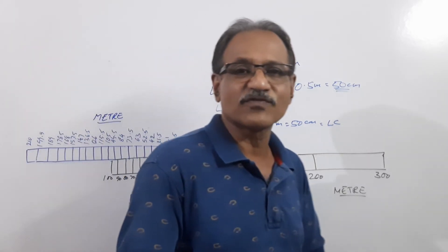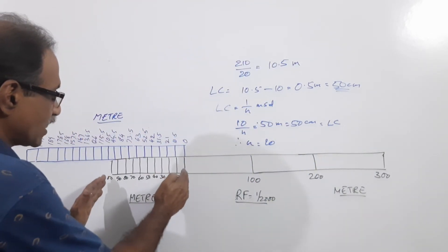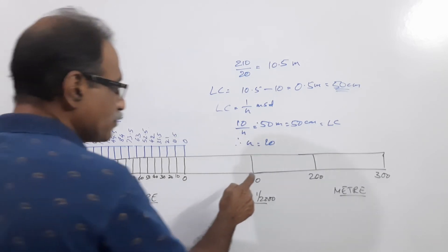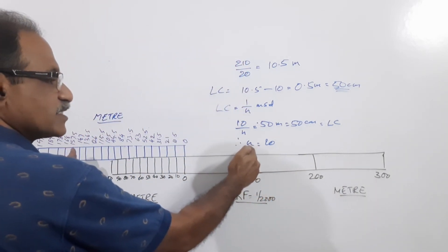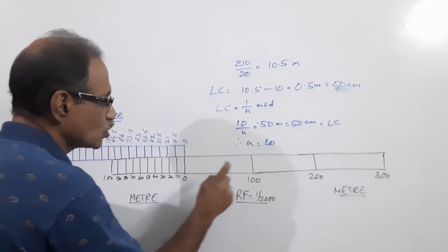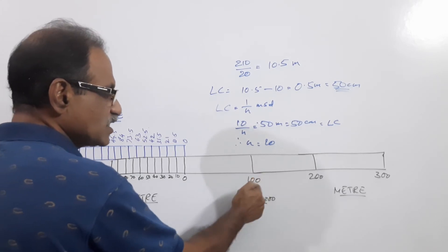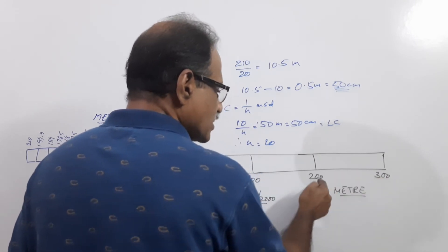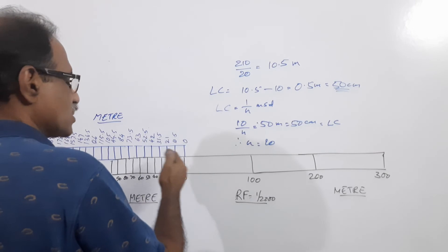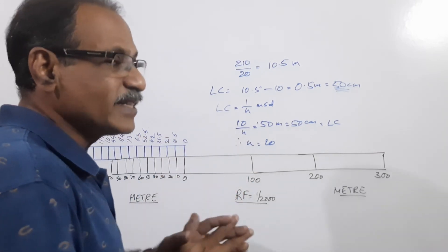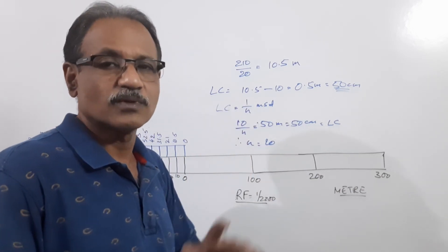This completes the construction of the backward reading Vernier scale. For your information, it is not necessary to construct from this end. You can place zero here and 200 here, divide into 20 equal parts, then take 21 divisions and divide into 20 equal parts. However, some distances close to 400 meters may be difficult or impossible to show with that arrangement.